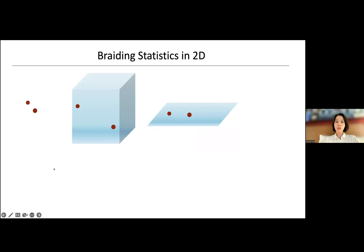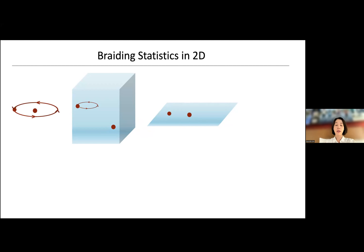Braiding statistics is a notion where you take one particle around the other and ask how the state of the system changes. In 3D, your loop can always be deformed to not include the particle, and physics cannot depend on your perspective. So in 3D you cannot define braiding statistics, but in 2D, when your motion is totally constrained to be in the plane, you can change the state of the system.